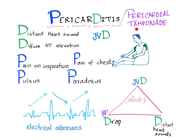Why is that? Because when you have pericardial tamponade, or there is effusion or fluid surrounding the heart, the heart sound will take more medium to travel to your stethoscope, so you will hear the sounds distant. Also, you may have jugular venous distension. Why? Because the heart cannot diastole, cannot expand, cannot relax because of the fluid surrounding it.